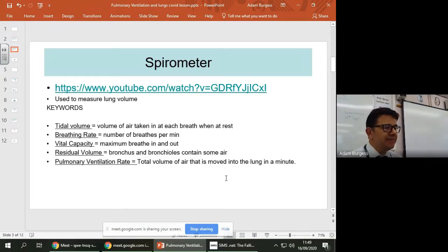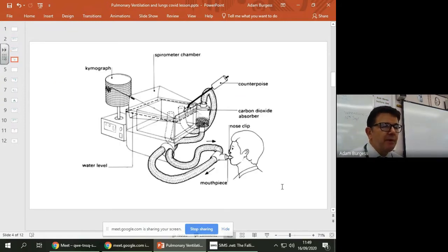So some air remains in there, you can never get rid of all of that air, it's called residual volume. And then we can work out things like pulmonary ventilation rates or PV rates, which is the total volume of air that has moved into the lung in a minute.